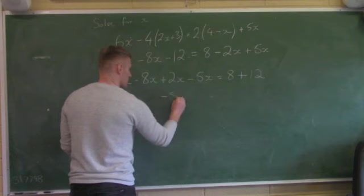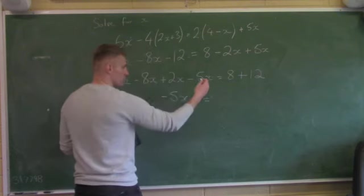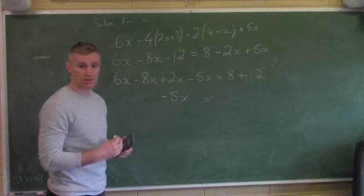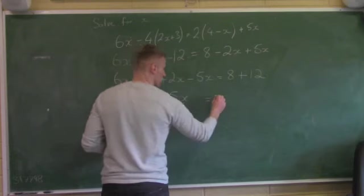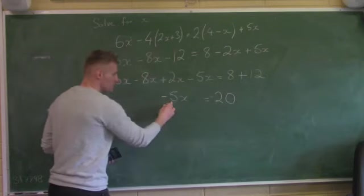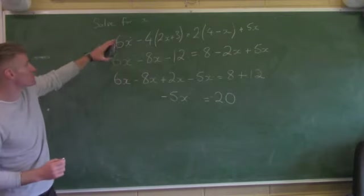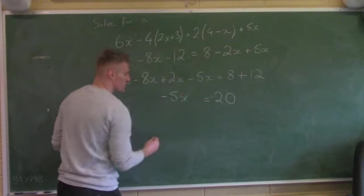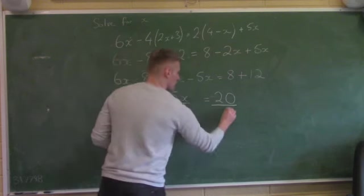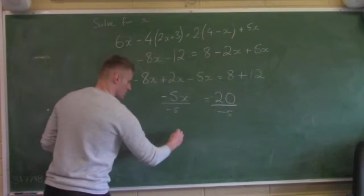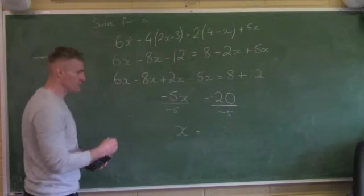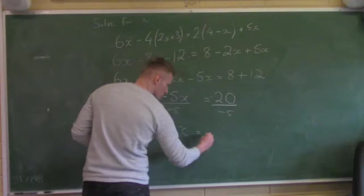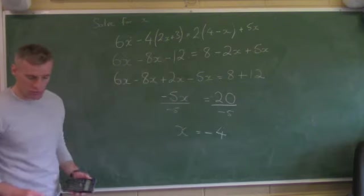So 6 minus 8 plus 2 minus 5 equals minus 5x. On the other side, 8 plus 12 gives me 20. So minus 5 multiplied by x equals 20. To solve for x, I divide both sides by minus 5. How many times does minus 5 go into 20? Minus 4 times. So x equals minus 4.